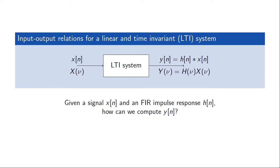When we looked at the discrete time Fourier transform, we used the linear and time invariant system to exemplify the use of the transform. So for an LTI system, we have the relation that if we have an input signal x of n, then the output signal y of n is given by the convolution between this input signal x of n and the time discrete function h of n, known as the impulse response of that system.